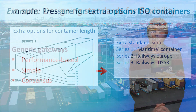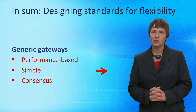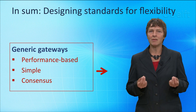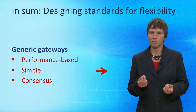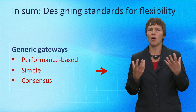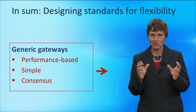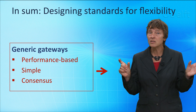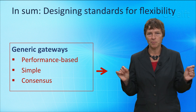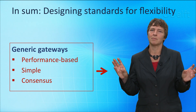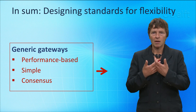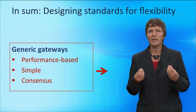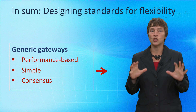To summarise, we have been looking at how compatibility standards create room for infrastructure change. The key is to design them to be as generic as possible — generic in the way they connect complementary and substitutive subsystems. This is done by specifying performance standards with as little detail as possible and keeping the standard simple — where possible, no options. The more consensus, the better the socio-technical compatibility, the more likely the standard will be widely implemented, and the stronger its impact as a generic gateway.